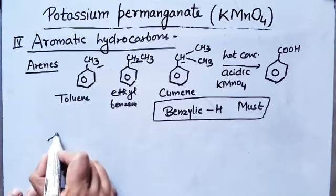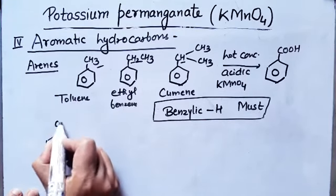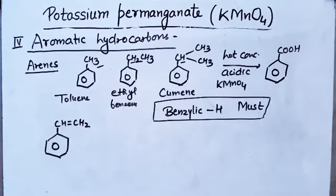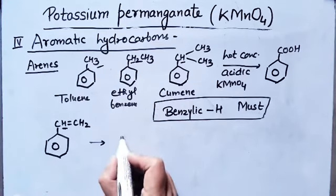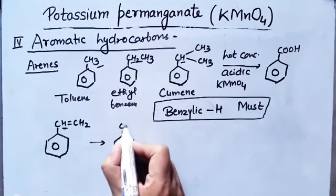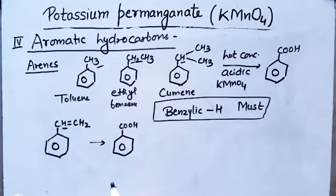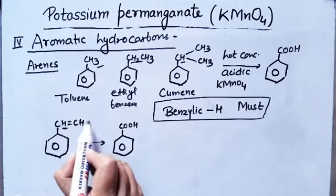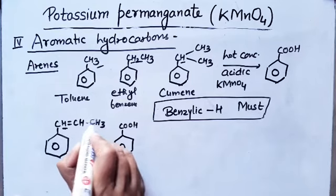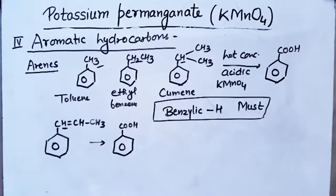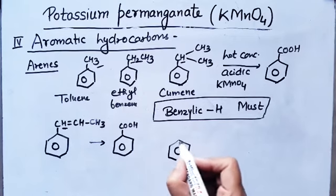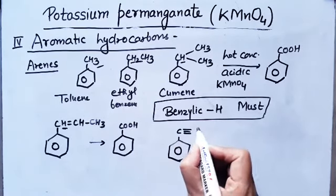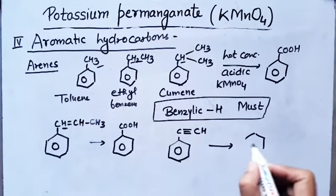Suppose you take another aromatic hydrocarbon where benzylic hydrogen is present — that will also change into benzoic acid. Even for styrene (with CH₃ attached), benzoic acid is formed because hydrogen is present. And if you have a C≡CH group attached, that also forms benzoic acid.